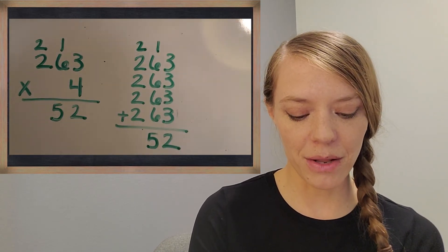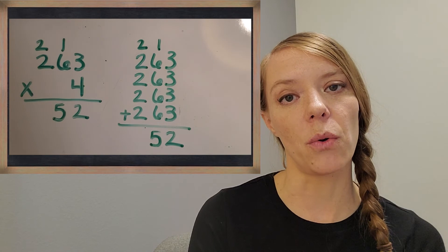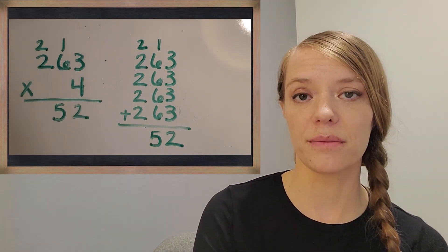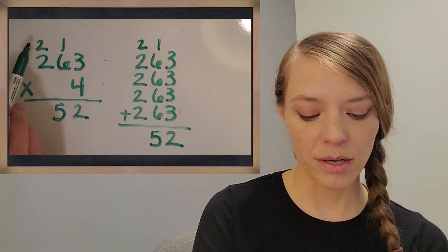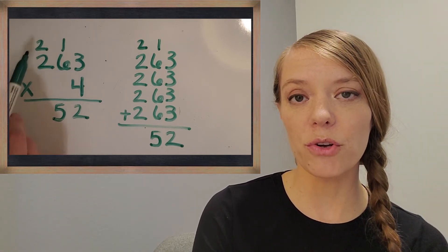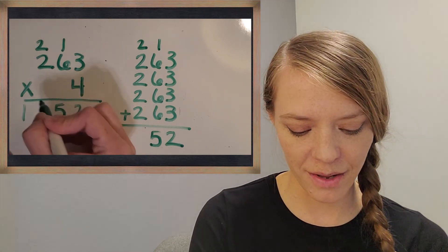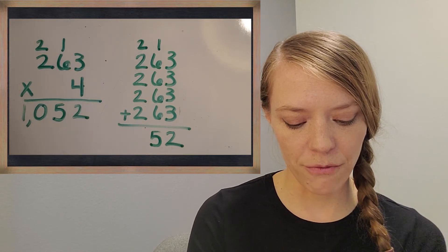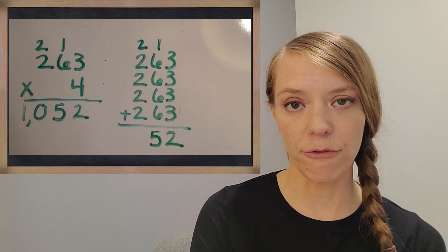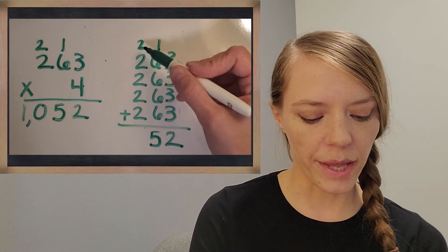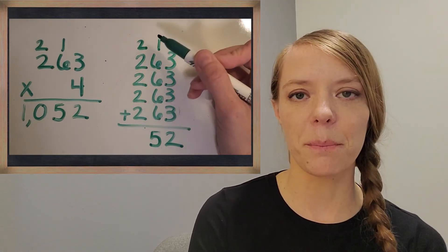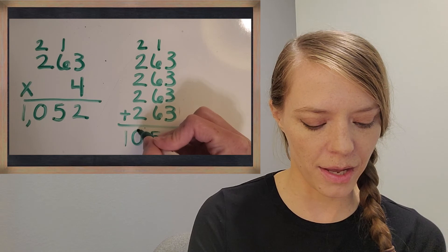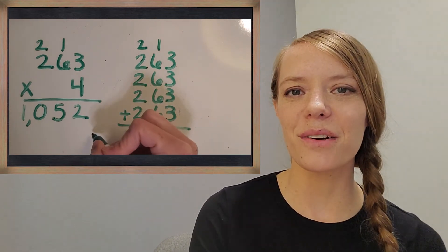Now the last multiplication: two times four is eight, plus the two we regrouped gives us 10. So the answer is 1052. Let's finish the repeated addition — all twos, so we can skip count: two, four, six, eight, ten. We got the same answer on both. This algorithm is really working out — it's a shortcut, and I think you're really going to enjoy that strategy.